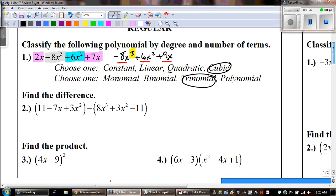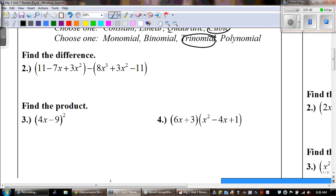Number 2 says to find the difference. Always look to see what operation, subtraction. To get rid of the parentheses, remember, we need to distribute. And in the front, we're going to distribute a positive 1, which means everything stays the same. But in the back, we need to distribute a negative 1. So, negative times a positive makes it a negative 8x cubed, a negative 3x squared.